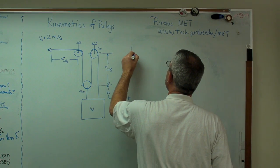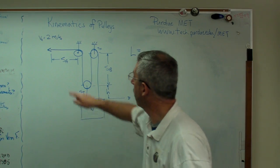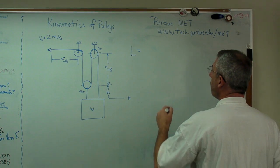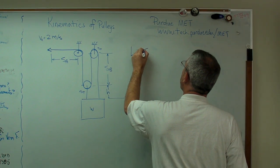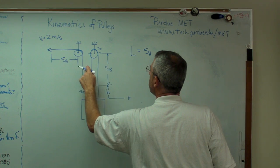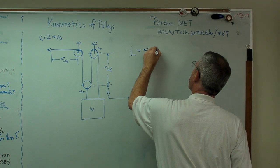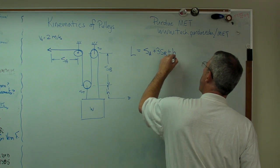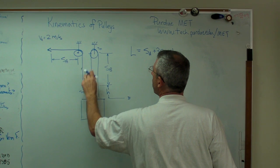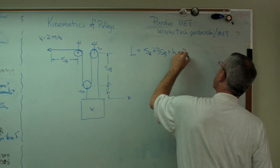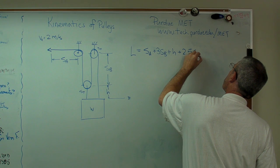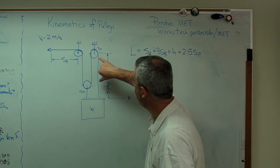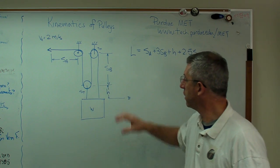Now, the length of the rope, L, out of whatever L is. L is the distance from there all the way down and around all the way to there. That's the total length of the rope. It's going to be SA plus 1, 2, 3 times SB, plus H, that length, plus 1, 2 and a half SP. So far we've got the length of the rope written in terms of all the different lengths we've got, these different segments here.